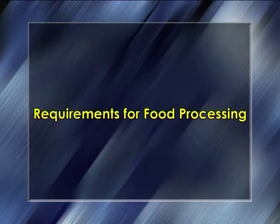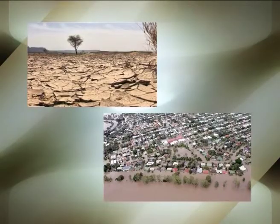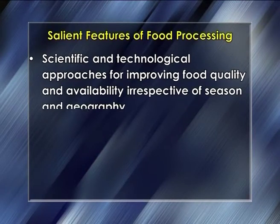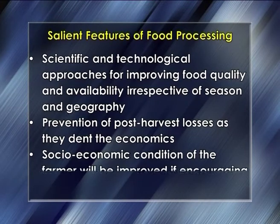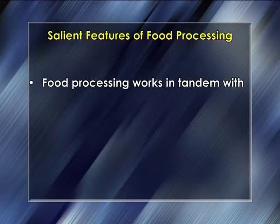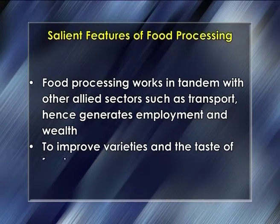Now let us discuss the requirements for food processing. The importance of food processing begins once the agricultural produce is harvested. As crop production is seasonal, derived food products should be made available throughout the year. The food should be preserved and made available during famine, floods and other natural calamities. Salient features include: scientific and technological approaches for improving food quality irrespective of season and geography; prevention of post-harvest losses; improving the socio-economic condition of farmers; generating employment in transport and allied sectors; and improving varieties and taste of food.